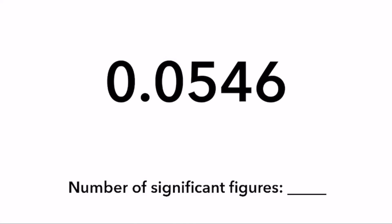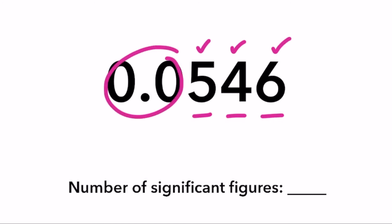Example two: 0.0546. The five, the four, and the six are non-zero numbers. The two zeros at the beginning are leading zeros, so they are not significant. Final answer: three significant figures.